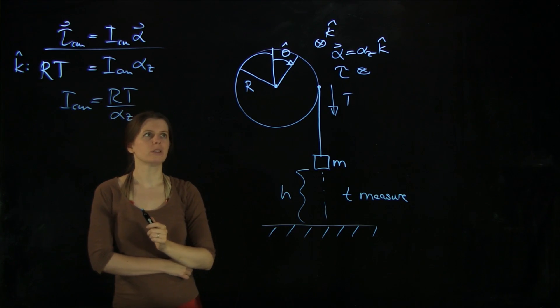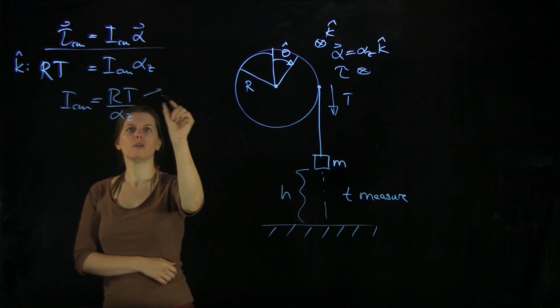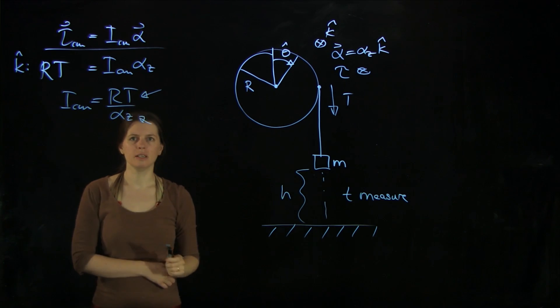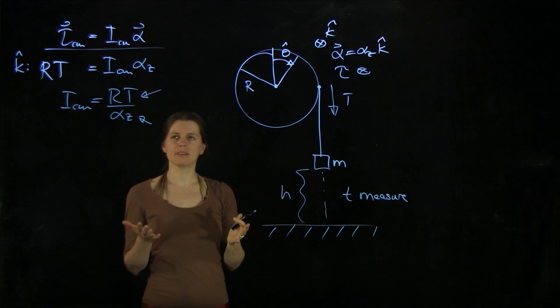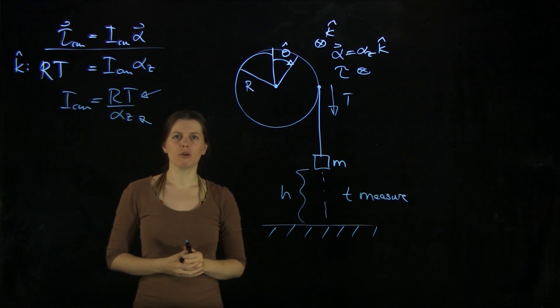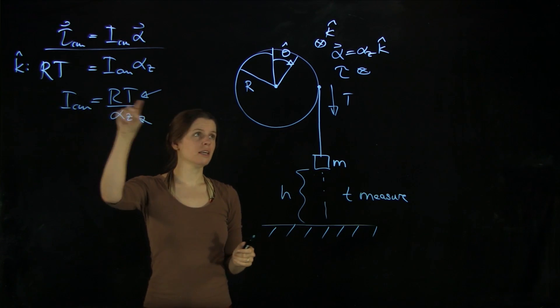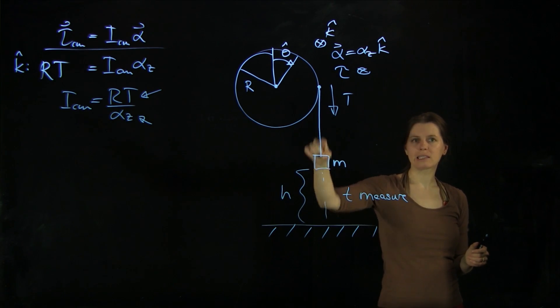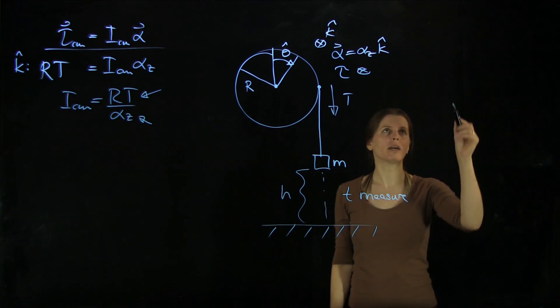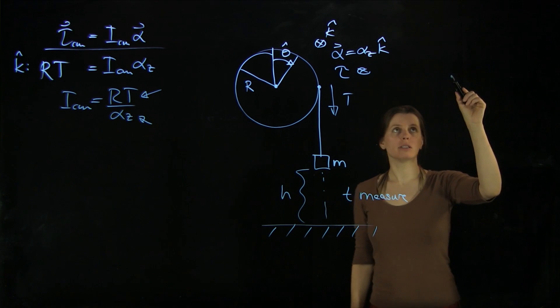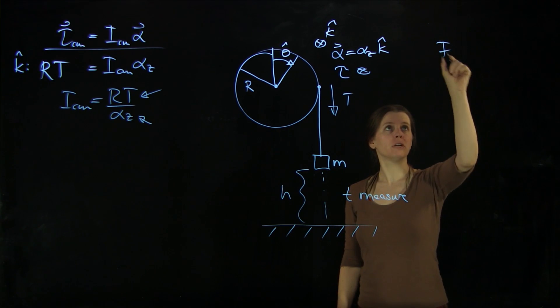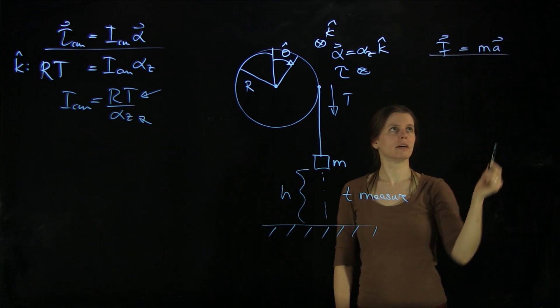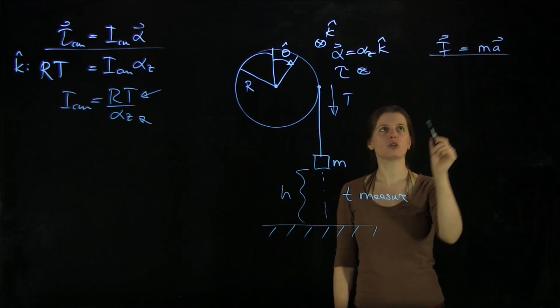Well, that's pretty good. But we have two unknowns in here, the T and the alpha z. And we can use some other concepts to actually get information on those. The T, as you can guess already, plays a role here in this massless string. So we can do a quick free body diagram and an F equals ma analysis to get to that tension force.